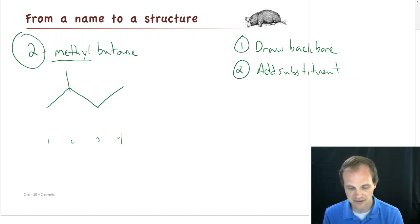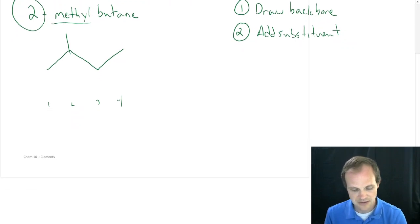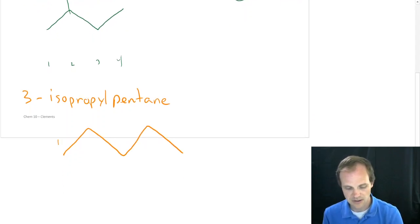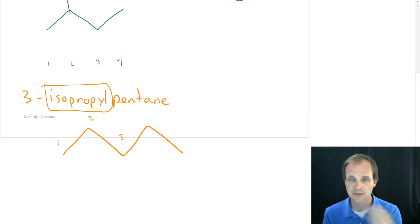Our next example that we're going to do is 3-isopropylpentane. And again, we draw the backbone first. Pentane is 5. 1, 2, 3, 4, 5. Number 3. 1, 2, and 3. And we put an isopropyl on there. And if you remember isopropyl, propyl is 3. So we've got 3 carbons, and that iso means connected in the middle.